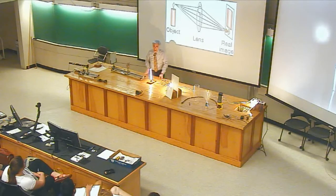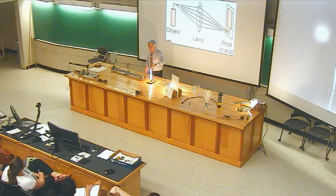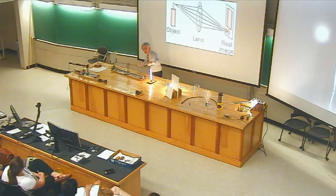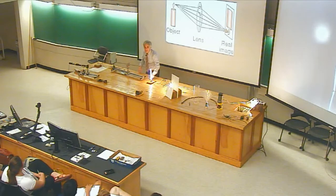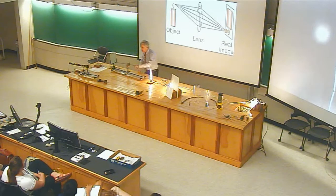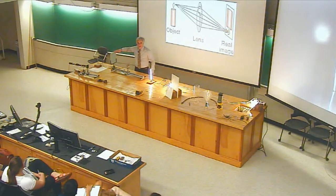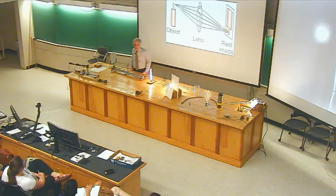Question: why is the real image upside down? It's a geometry issue. Light from the top of the filament goes through the lens and by geometry goes downward — having started high, it ends up low. Light from the bottom of the filament started low, goes through the lens, and ends up high. So the lens flips everything upside down, in part just by simple geometry.